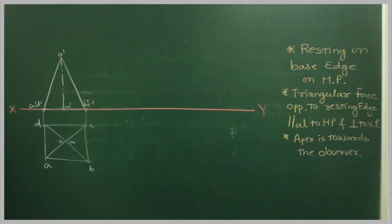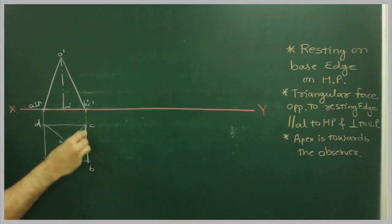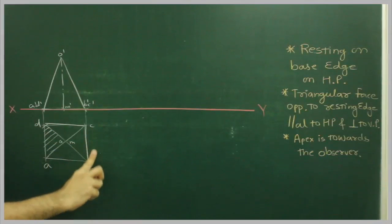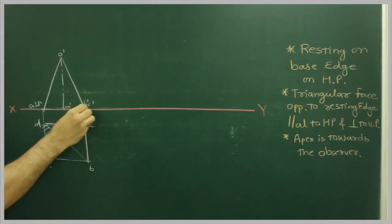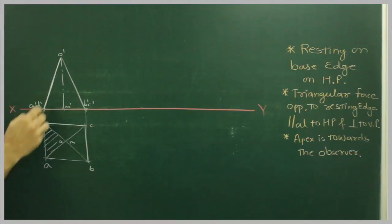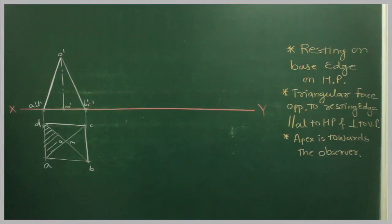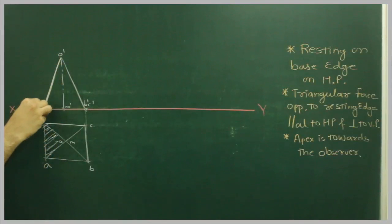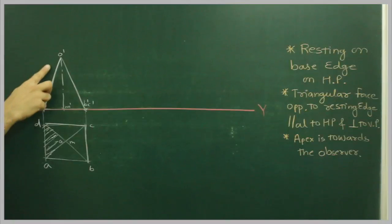Now we are talking about the triangular face opposite to the resting edge. If this is the resting edge, then this is the triangular face which is opposite to the resting edge. If this is the resting edge — B dash, C dash — then this is the face which is opposite to the resting edge. This is the triangular face opposite to the resting edge, and they are saying that this face is parallel to HP.